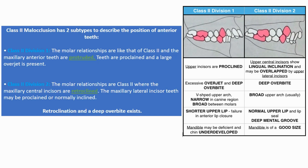Class 2 malocclusion has two subtypes to describe the position of anterior teeth. Class 2 Division 1: the molar relationships are like that of Class 2 and the maxillary anterior teeth are protruded; teeth are proclined and a large overjet is present. Class 2 Division 2: the molar relationships are Class 2 where the maxillary central incisors are retroclined; the maxillary lateral incisor teeth may be proclined or normally inclined, and a deep overbite exists.